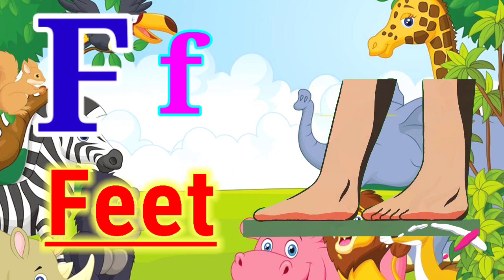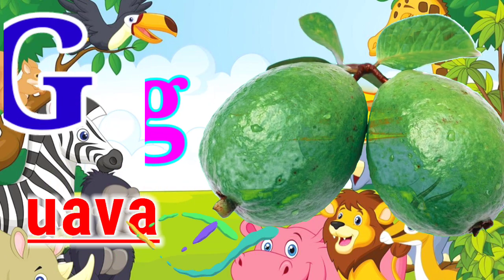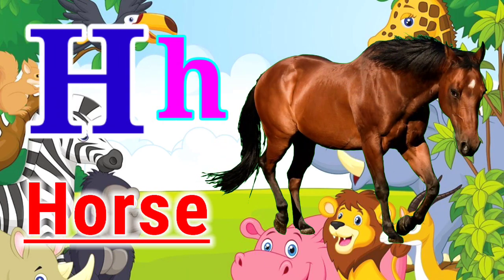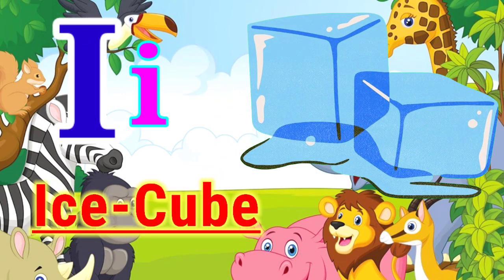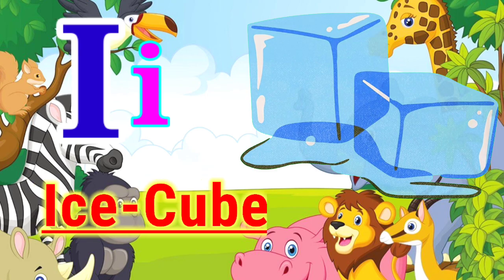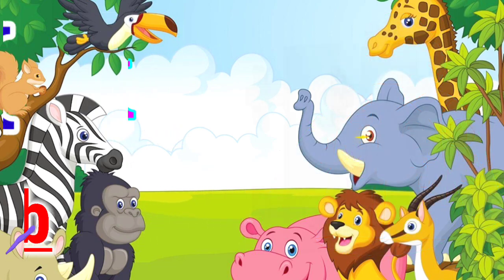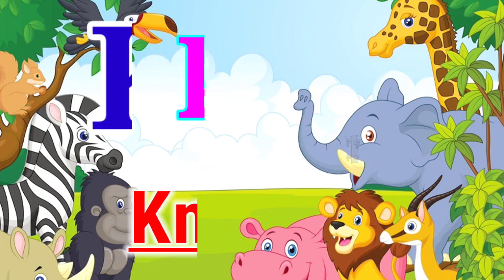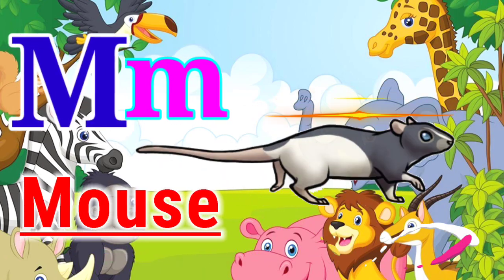F for feet. G for guava. H for horse. I for ice cube. J for jambar. K for knob. L for light. M for mouse.